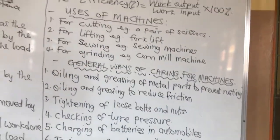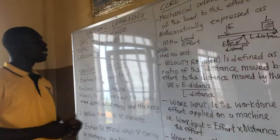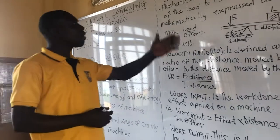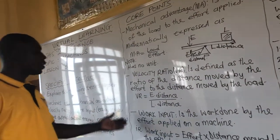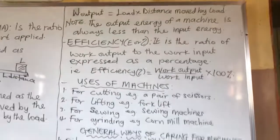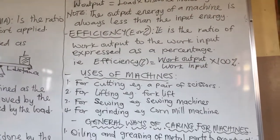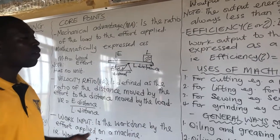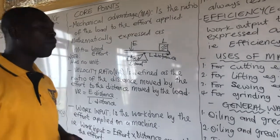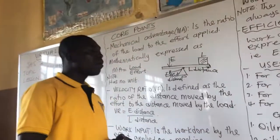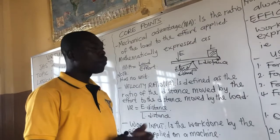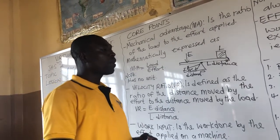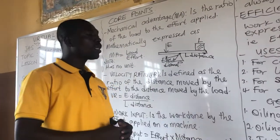I hope you've been able to learn something today. We covered mechanical advantage, velocity ratio, work input, work output or energy output, and efficiency of a machine. You've also seen some uses of machines and general ways of caring for machines. I urge you to revise your notes and continue to stay safe. Until we meet again, take good care of yourself. Bye-bye.